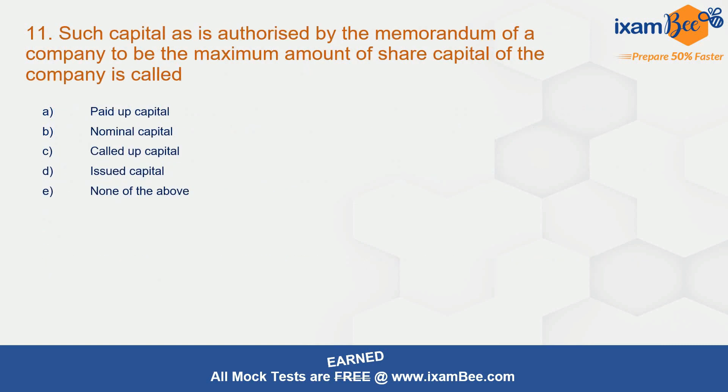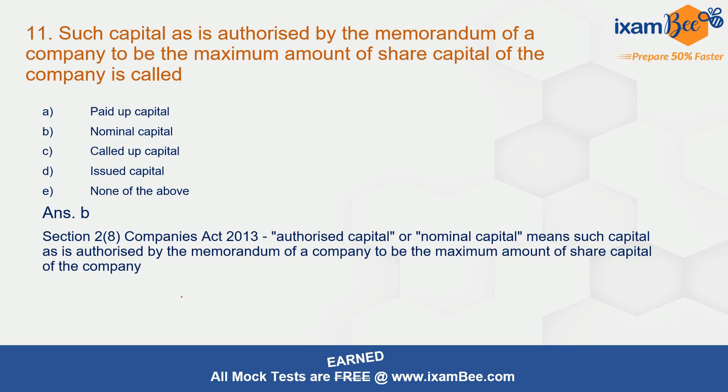Question 11: such capital as is authorised by the memorandum of a company to be the maximum amount of share capital of a company is called what? The correct answer is B — nominal capital. Section 2(8) of the Companies Act defines authorised capital or nominal capital as the capital authorised by the memorandum of a company to be the maximum amount of share capital.